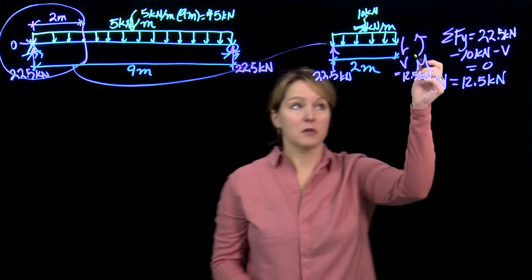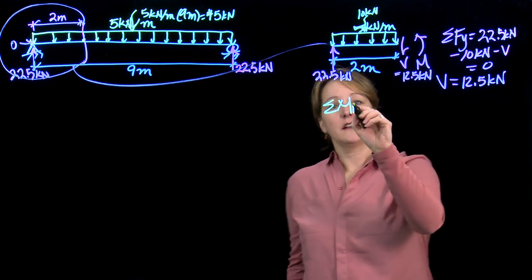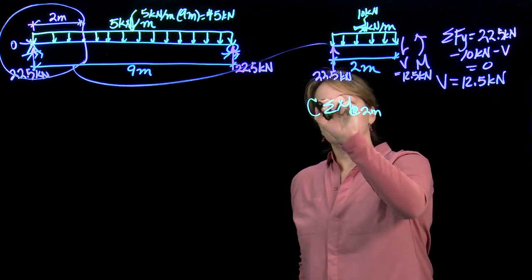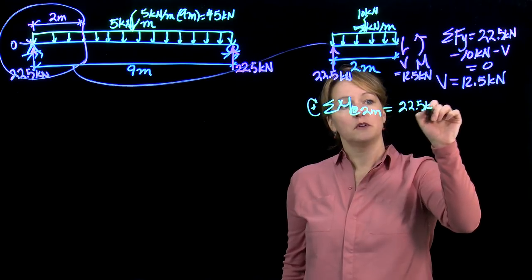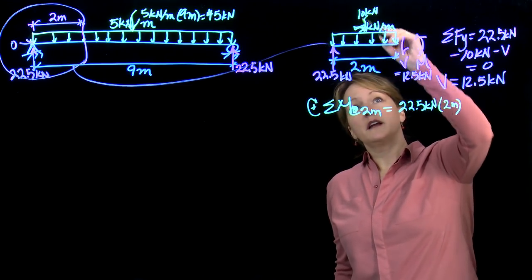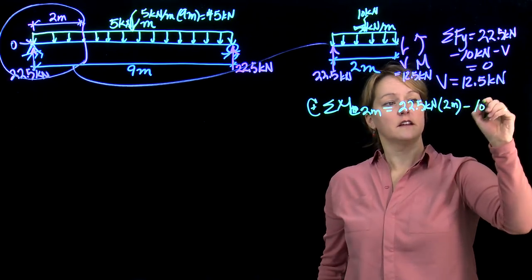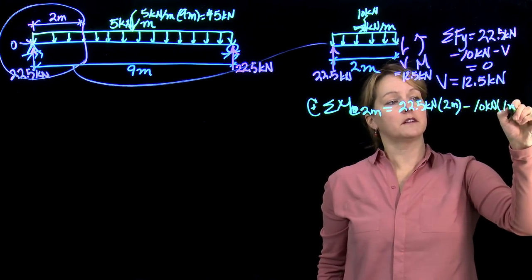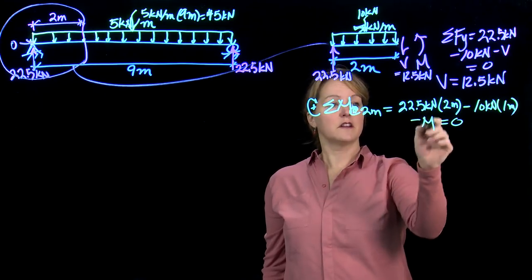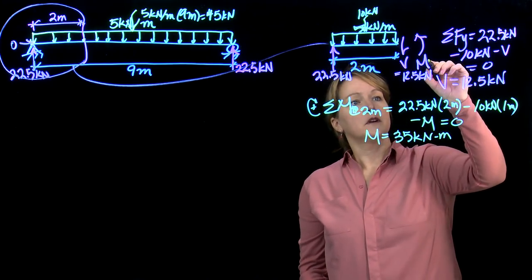But I'd also want to calculate this bending moment. Bending moment tends to be more critical in beams. I'm going to sum the moment about this cut at 2 meters. So I'll have positive 22.5 kilonewtons at a distance of 2 meters from my point. I could use this distributed load, but I can also use the resultant load. So I have 10 total kilonewtons pushing the opposite direction, acting at a distance of 1 meter. I always have the moment still acting in there, minus M equals zero. Solving, I get the moment is 35 kilonewton meters.